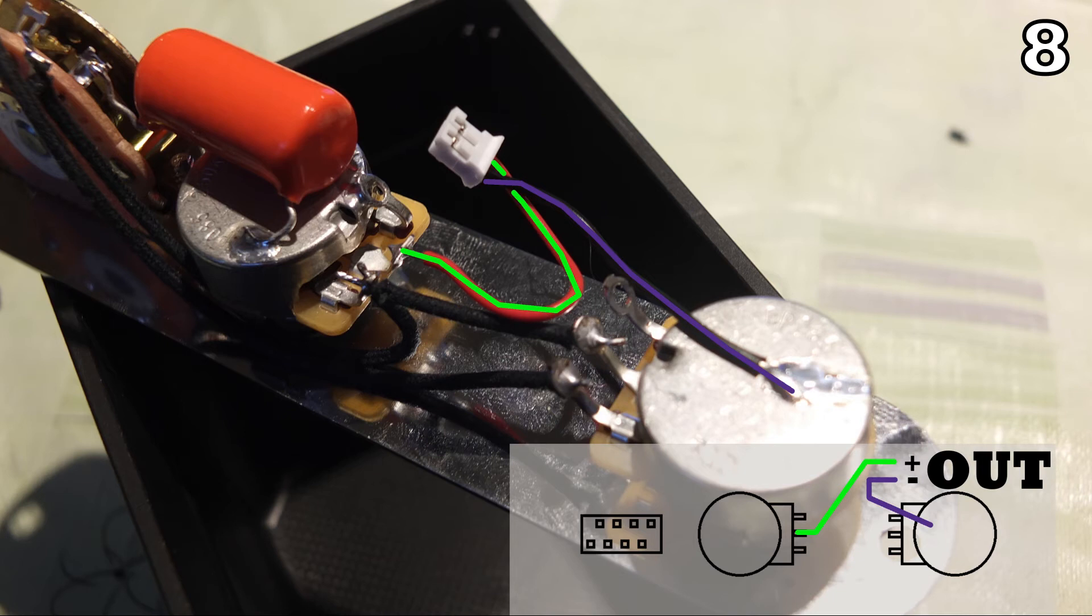Step number eight is the output jack. Plus goes to the middle pin of the volume pot and ground goes to any housing of any pot you like. In my case I've used the blend pot. This already finishes the harness.